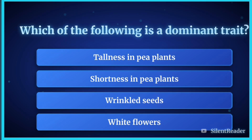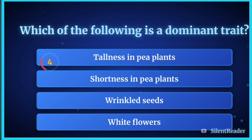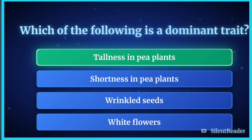Which of the following is a dominant trait? The correct answer is tallness in pea plants.